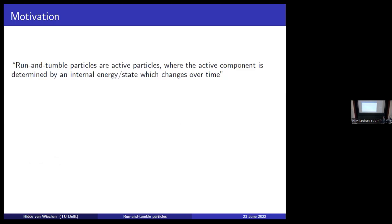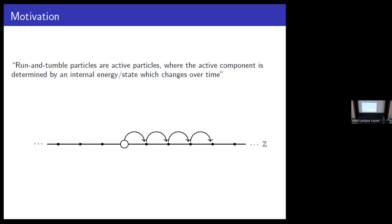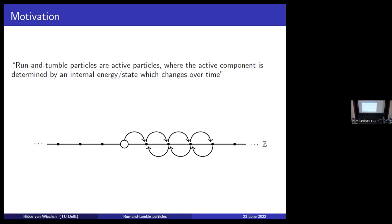He said: run and tumble particles — these are active particles where the active component is determined by an internal state or energy, which changes over time. Then he sketched a figure of a particle moving to the right, and then after a while the particle decides it wants to go to the left. So it goes to the left and then wants to go right again, and so on. We see a particle running to the right and then tumbling to go to the left — that is the funny name, run and tumble particle.